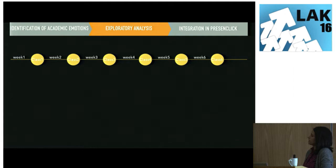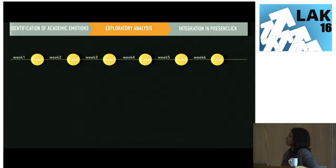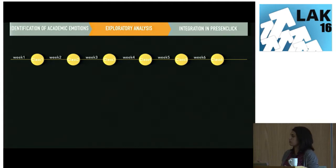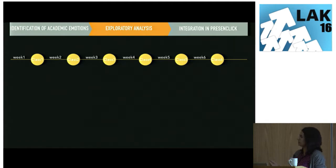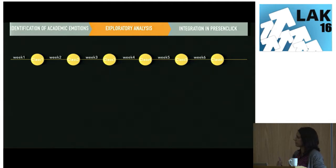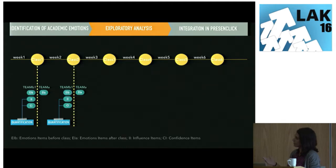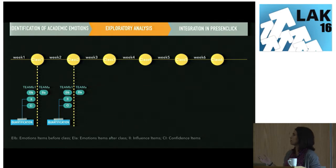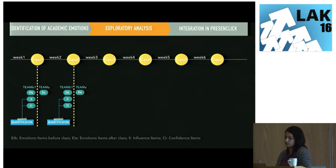The exploratory analysis lasted six weeks. As the course had only one session per week, in order to have enough data we asked students to answer the questionnaire before class — thinking about emotions during the previous week while working on subject activities — and after class, to think about emotions they had during the session. In the first two classes, besides the emotion items, we also asked them to answer the influence and confidence items.